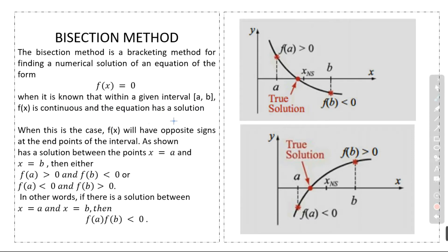We are only able to solve f(x) = 0 when this equation has a solution in the interval [a, b] and f(x) is continuous on this interval. These are the conditions for the bisection method. When this is the case, f(x) will have opposite signs at each end of the interval.